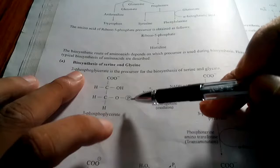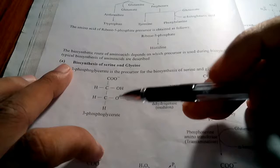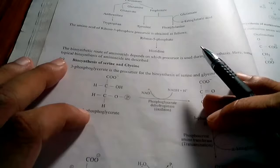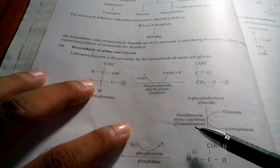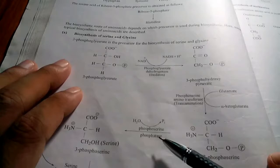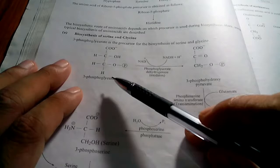These reactions are completed in three steps. The first one is oxidation, the second is transamination, and the third is dephosphorylation. So 3-phosphoglycerate is converted into serine through these three steps.